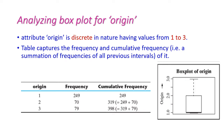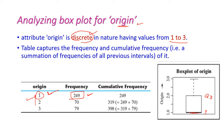Next, let us analyze the attribute origin. This is also discrete in nature with only three values: 1, 2, and 3. The maximum records have origin value 1, with 249 records. Because of this, the minimum, Q1, and median are all 1. There is no lower whisker, but Q3 and the upper whisker are present.